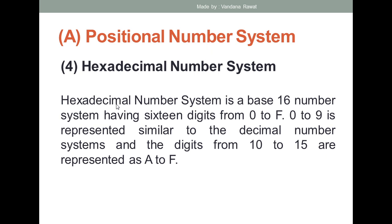The next type is hexadecimal number system. Hexa means 6 and decimal means 10, so total 16 digits you will have. These 16 digits go from 0 up to F. From 0 up to 9 it is represented similar to the decimal number system, but the remaining digits from 10 to 15 are represented by letters: 10 is represented as A, 11 as B, 12 as C, 13 as D, 14 as E, and 15 as F.